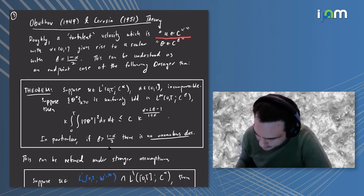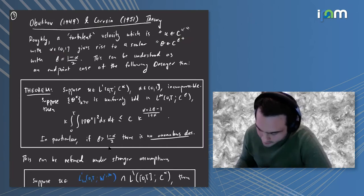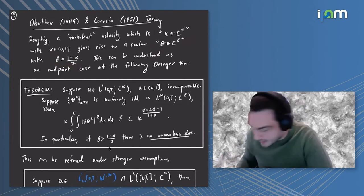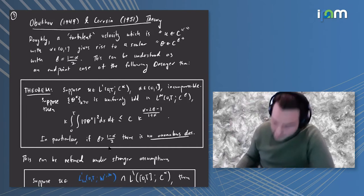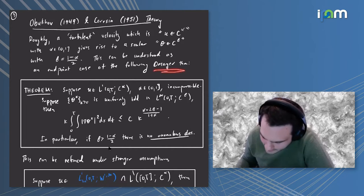What they essentially say is that a turbulent velocity field in Holder C^α with alpha between zero and one gives rise to a scalar field in C^β where beta is related to alpha like 1 minus alpha over 2. This relationship between beta and alpha can be understood as an endpoint case of an Onsager type theorem.